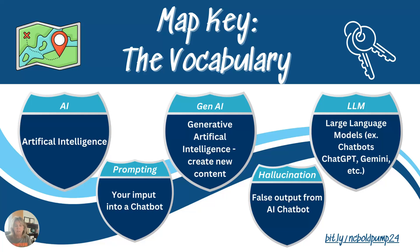Before we get started, let's break down a couple of basic AI vocabulary terms. We obviously know AI is artificial intelligence. Gen AI is what's happening in artificial intelligence that's so groundbreaking — it's actually creating new content. LLM stands for large language models. Those are our chatbots like ChatGPT, Gemini, and Claude. It seems like there's a new one coming out every week or two.